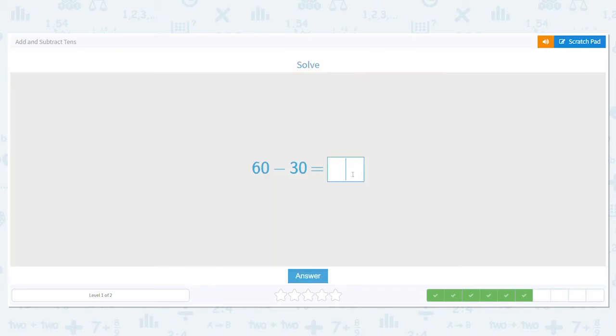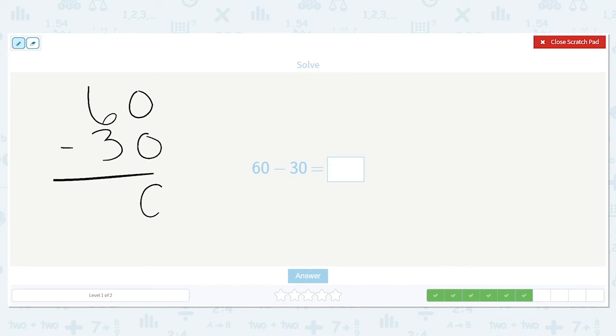Next, 60 minus 30 equals. Okay, let's do it both ways. 60 minus 30. What's 0 minus 0? 0. And what's 6 minus 3? 3. Now, you can also do the sticks. Pretend I have a stick that has 10 blocks all connected. There's 1, 2, 3, 4, 5, 6.